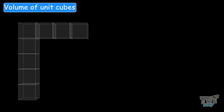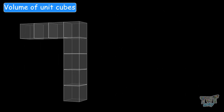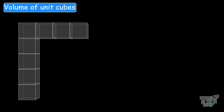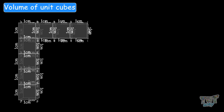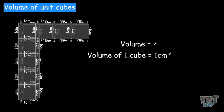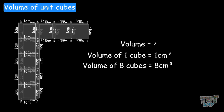For example, you can see this figure — there are 8 unit cubes, each with a side of 1 centimeter. So what will be the volume of this figure? Every cube has a volume of 1 centimeter cubed, so the volume is 8 times 1, which is 8 centimeters cubed.